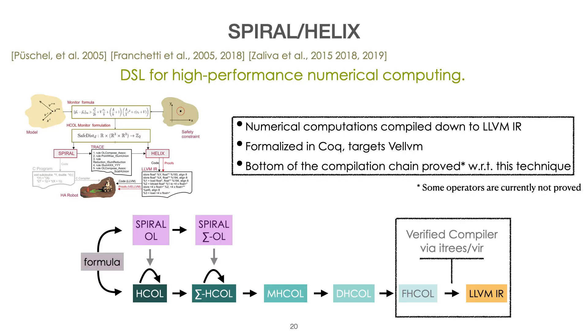We have conducted a major case study in order to validate this approach. Helix is a formalization of something called Spiral, that is a pipeline to generate high-performance code for numerical computation. Helix is a formalization in Coq of Spiral, and chose to target Vellvm as its back-end. In itself, it has a complex compilation chain that is using diverse techniques to ensure correctness, but at the very bottom, its last intermediate representation, called FHCOL, targets Vellvm, our formalization of LLVM IR.